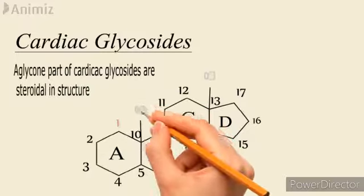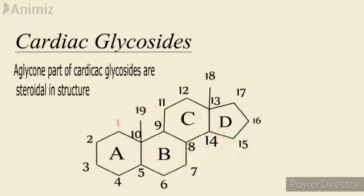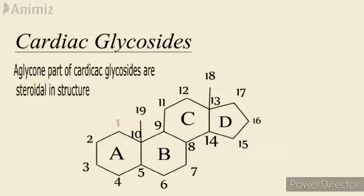Carbon number 17 is an important position in the steroid structure. Substitution occurs at C17, and based on the structure of that substitution, there are various types of steroids available in nature.